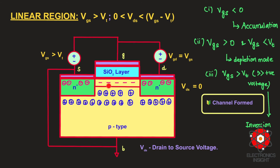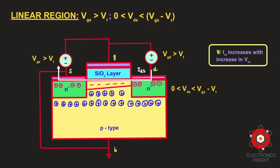Now let us see what happens when we slightly increase the drain-to-source voltage, while it is still retained to be less than VGS minus VT. With VGS greater than VT, we observed accumulation of attracted electrons, and the region under the gate changes from P-type to N-type because of the attraction of minority charge carriers. This creates a conductive path between the source and drain — this is the inversion condition and the transistor is now in the ON state. When a small positive VDS is applied to the drain, since the drain is heavily doped N-type, this PN junction starts to behave like a reverse-biased diode.